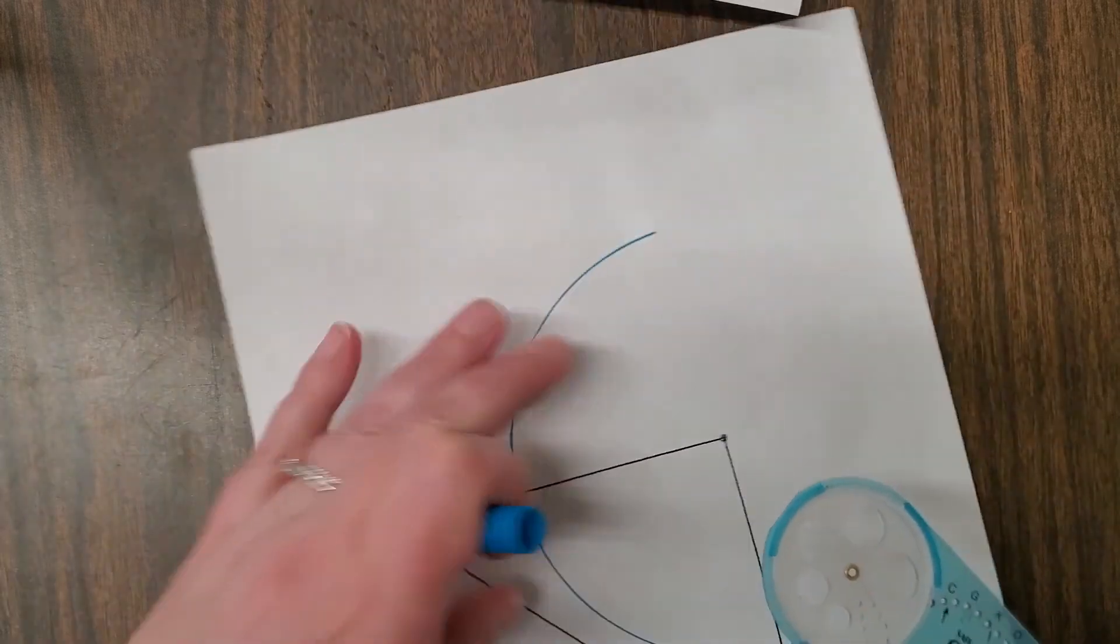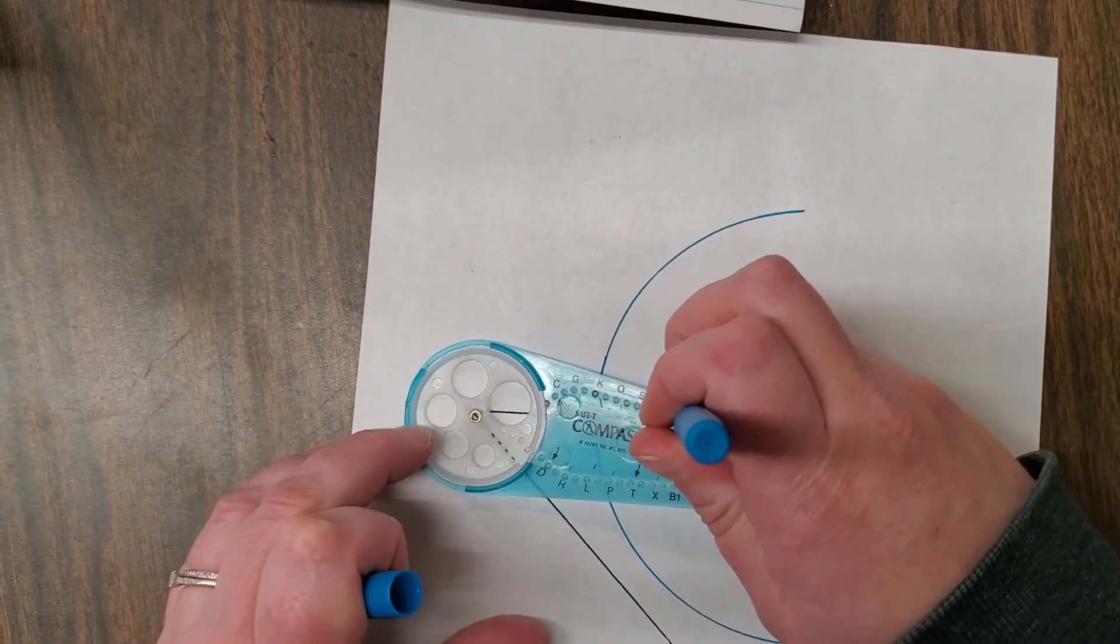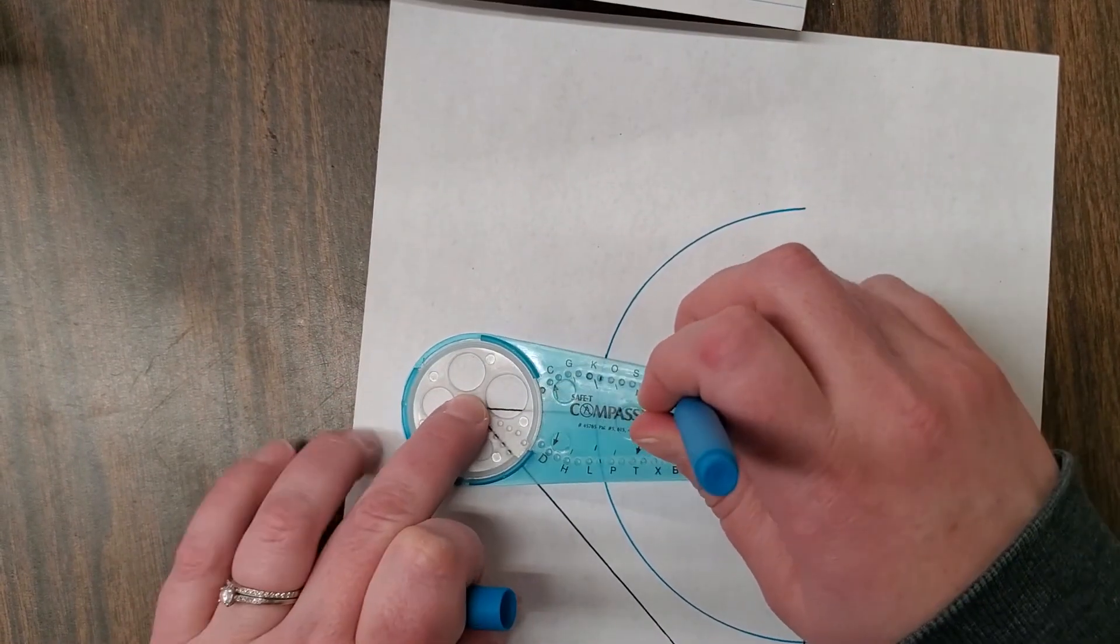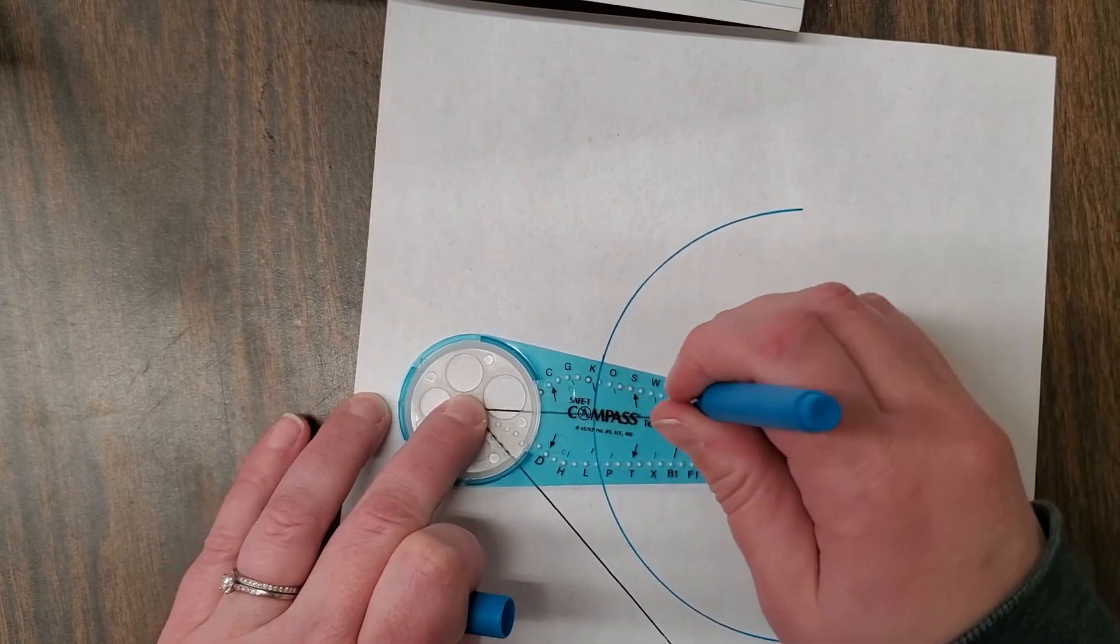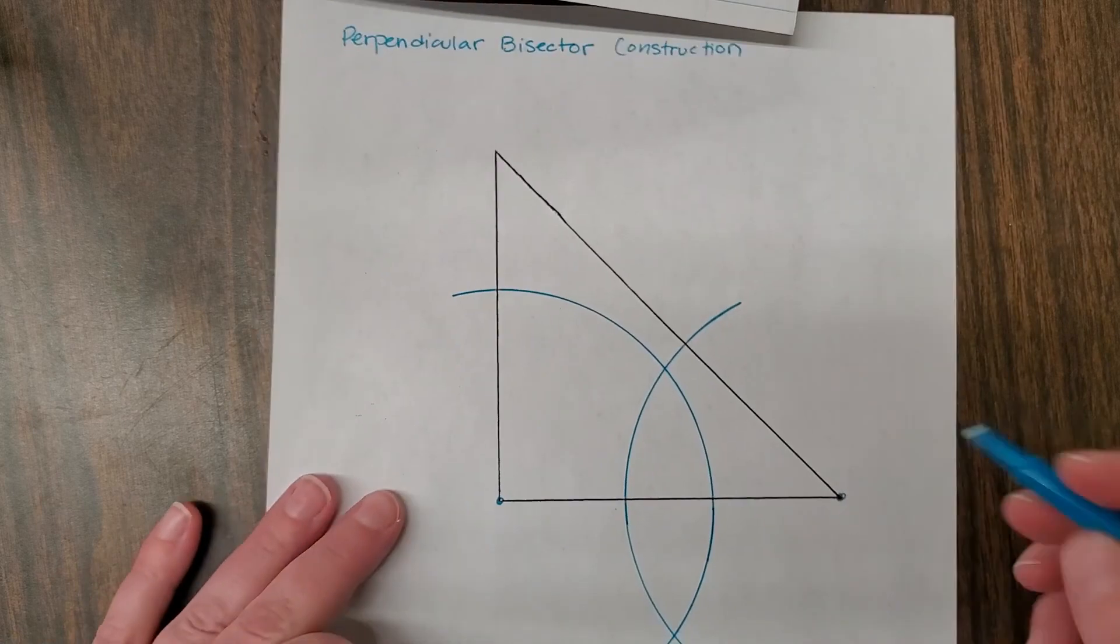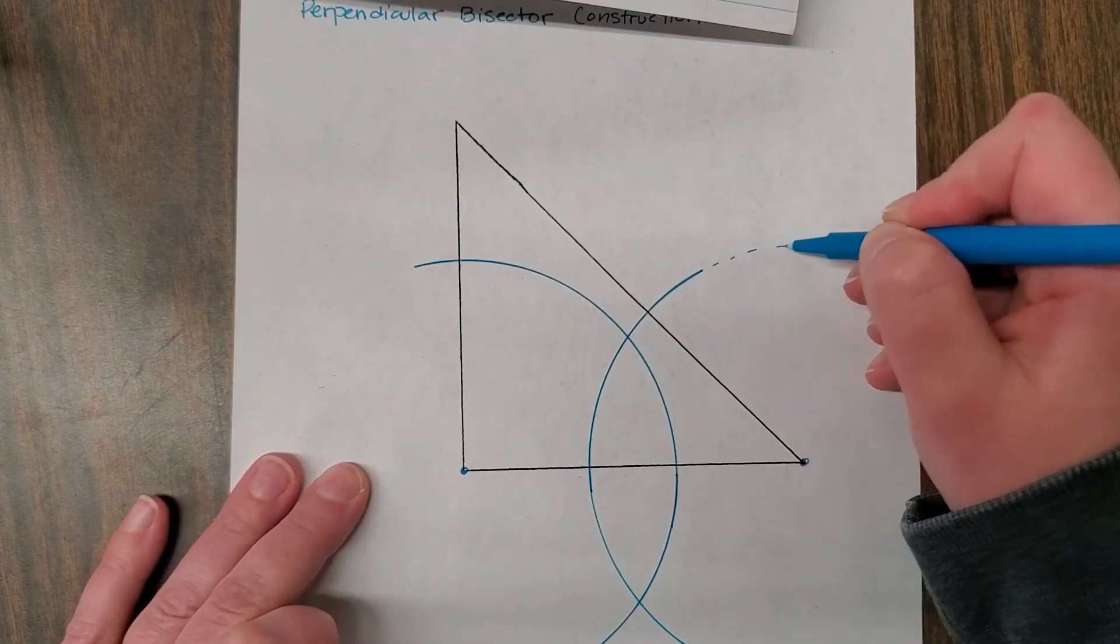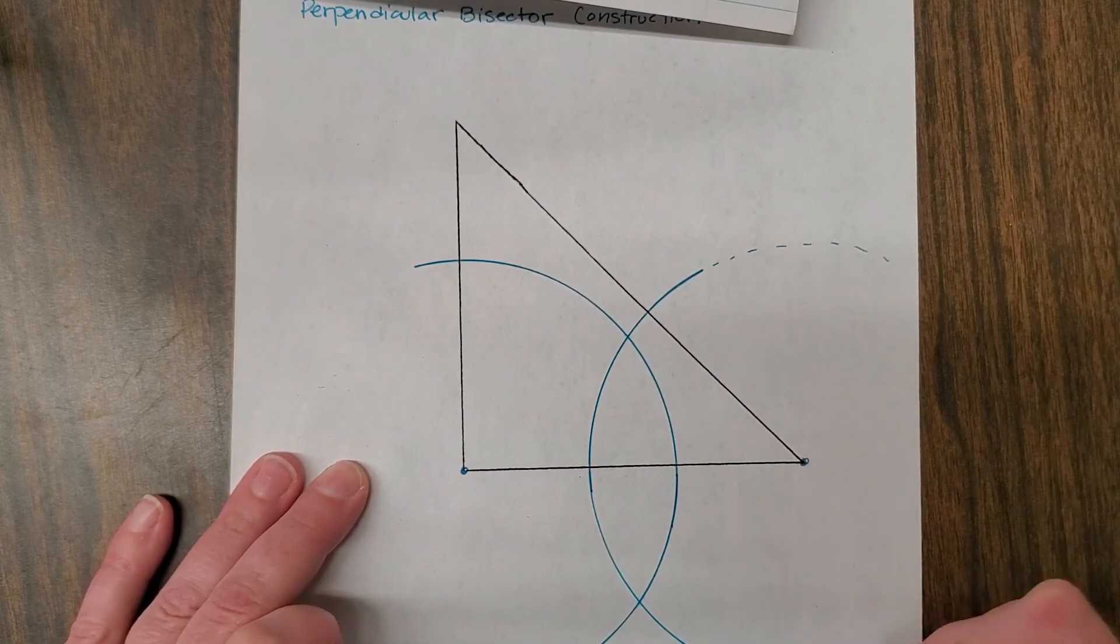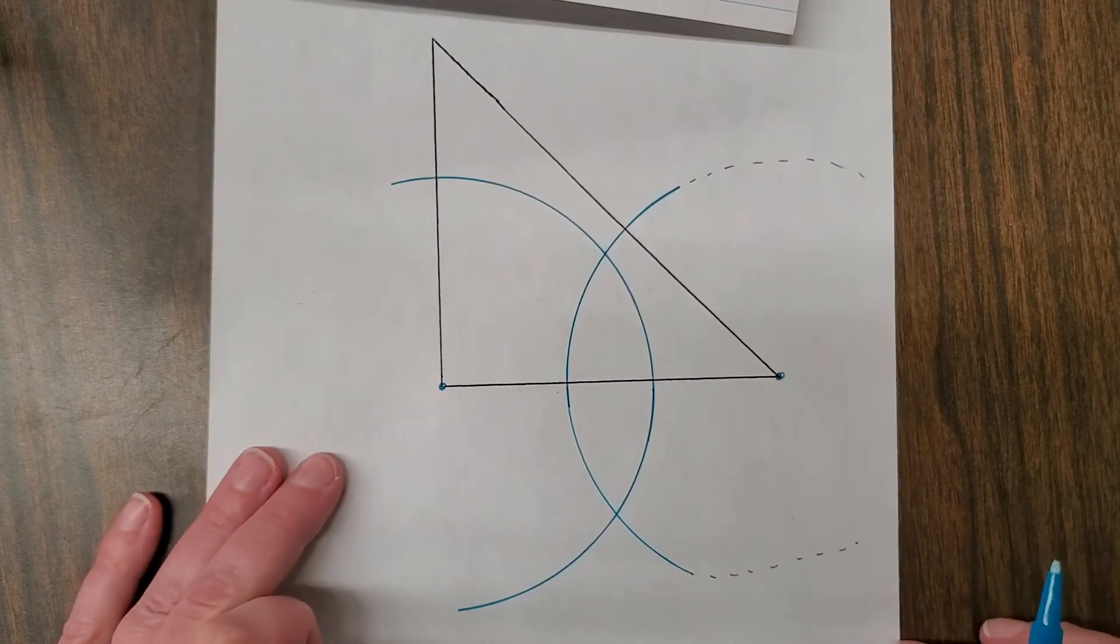All right, and then I'm going to create the same one on the other side. I just like to flip my page to make it work better. All right, and of course you could create the entire circle, but as you can see, that goes off the page, and so there's really no point to that.